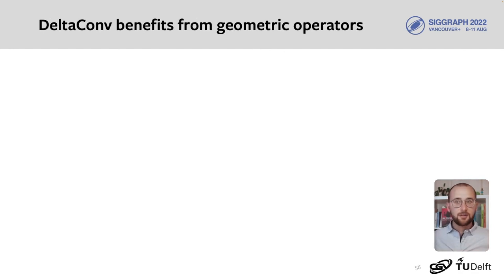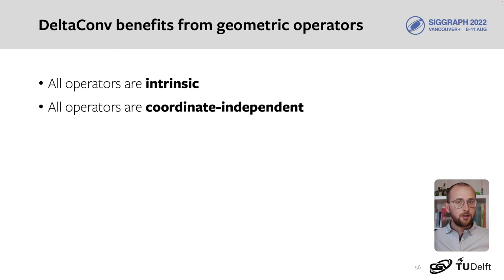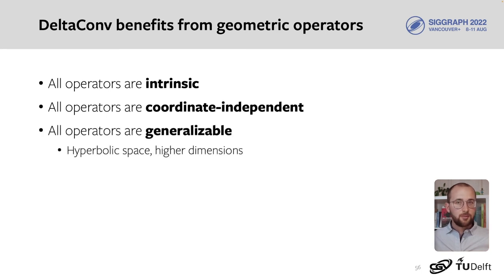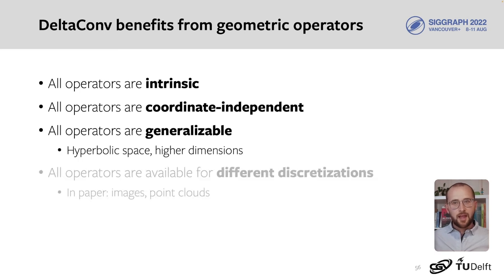Now finally, a part that I'm very excited about. DeltaConv builds on foundations of differential geometry. Therefore, it inherits a lot of nice properties for curved surfaces. All operators are intrinsic. They're also all coordinate independent. All the operators are generalizable to other manifolds, such as hyperbolic spaces and higher dimensions. And we already have nice discretizations. In this paper, we show that DeltaConv works effectively on images and point clouds.